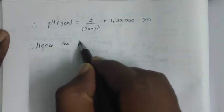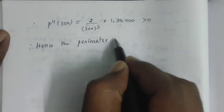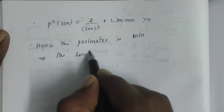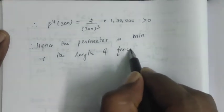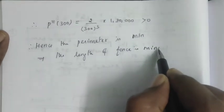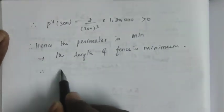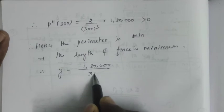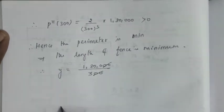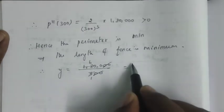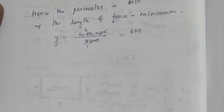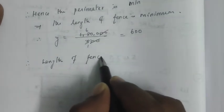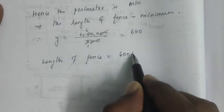Minimum perimeter implies the length of fence is minimum. Therefore, we have y = 180,000/x. Now x = 300, so y = 180,000/300 = 600. The length is 600 meters.